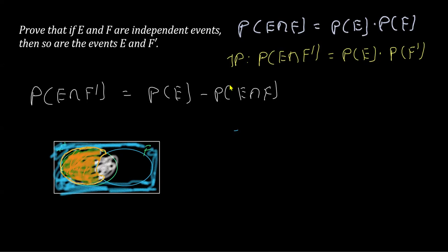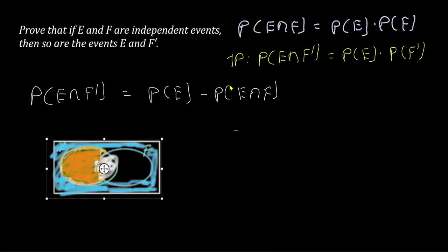So that's what I wrote. I can write P(E intersection F') as from this whole E, if I subtract this region, that is their intersection, I should get this. If this is clear, let's set it aside.